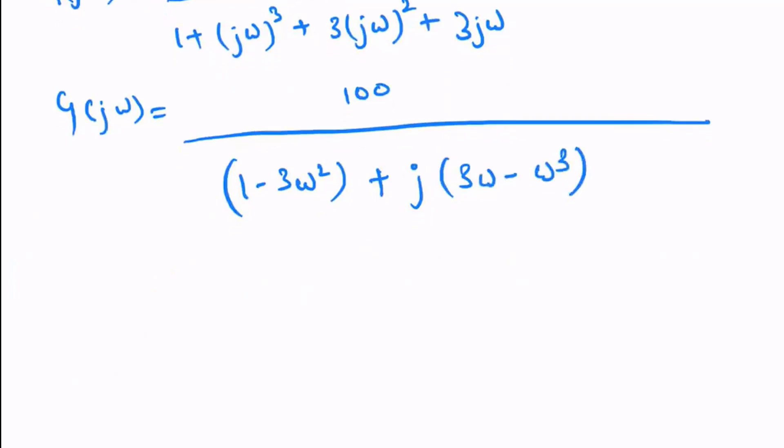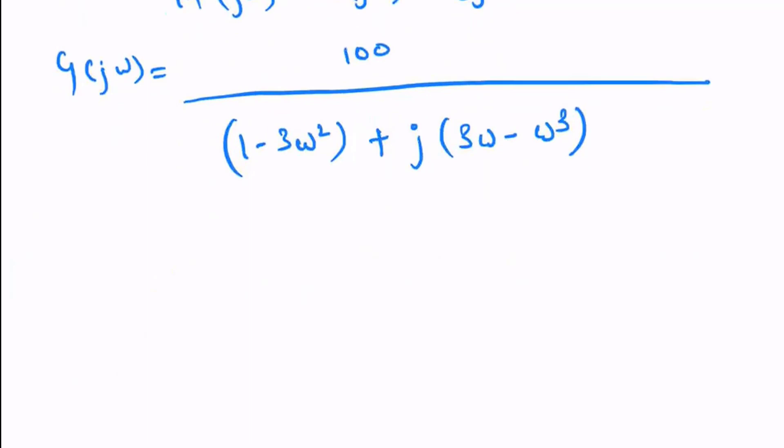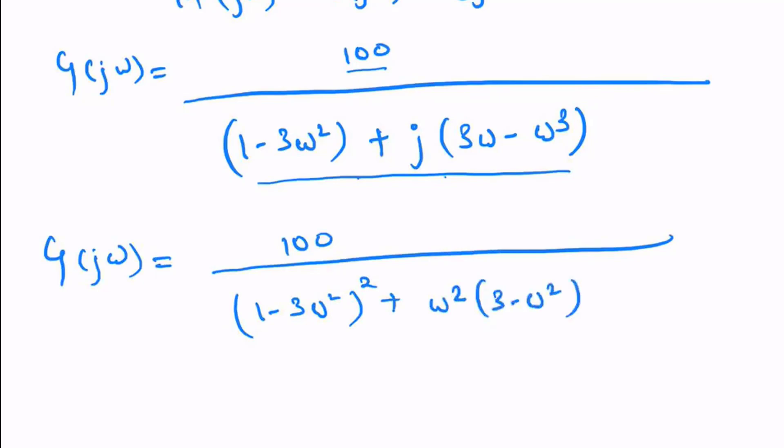Now let's multiply by the complex conjugate of the denominator to separate real and imaginary parts. G(jω) becomes 100 divided by [(1-3ω²)² + ω²(3-ω²)²].